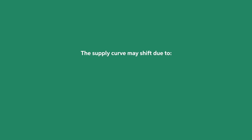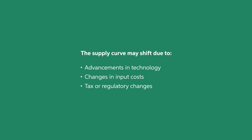The supply curve may have a parallel shift due to advancements in technology, changes in raw materials or input costs, or tax and regulatory changes that incentivize or disincentivize means of production for a particular good. When input costs decrease, consumers can also benefit from more quantity supplied or a lower observed price at a fixed quantity. That's how economies of scale and diseconomies of scale can affect firm strategy when it comes to production.